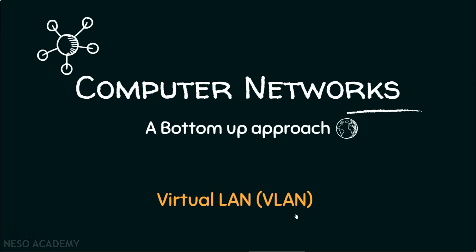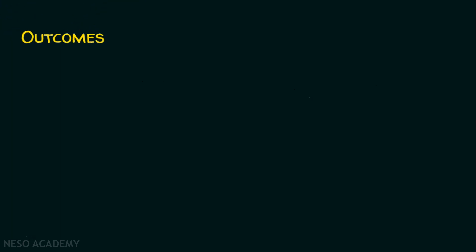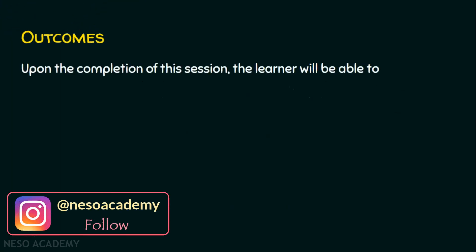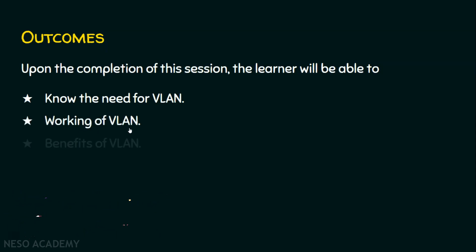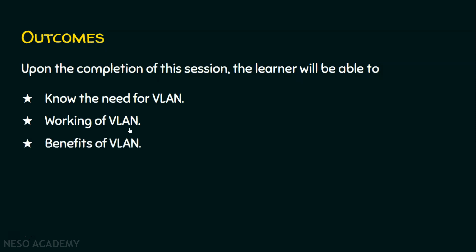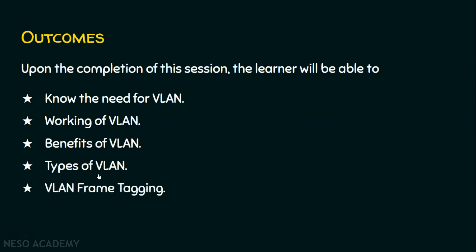Let us start the session with the outcomes. In today's lecture, we have five outcomes. Upon the completion of the session, the learner will be able to: outcome one, know the need for VLAN; outcome two, see the working of VLAN; outcome three, see the benefits of VLAN; outcome four, know the types of VLAN; and outcome five, see VLAN frame tagging.